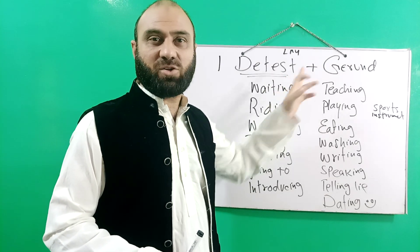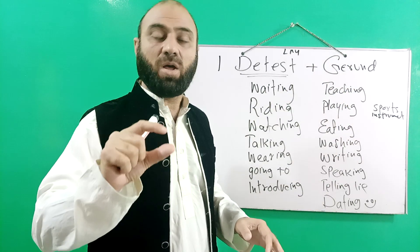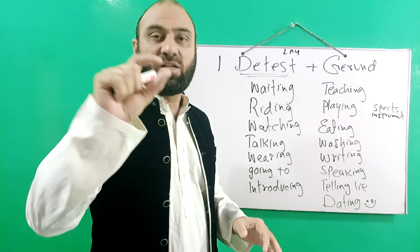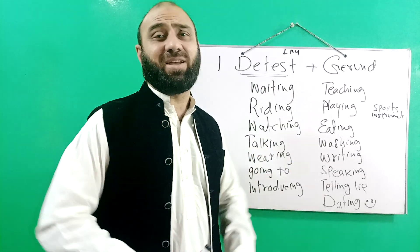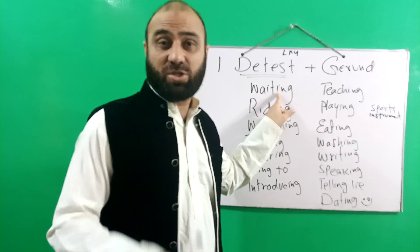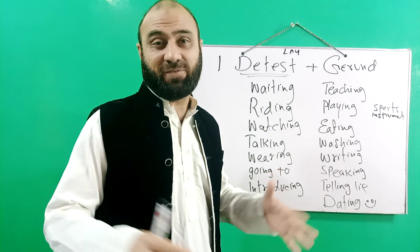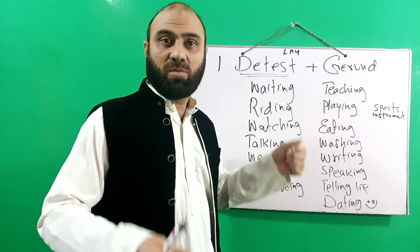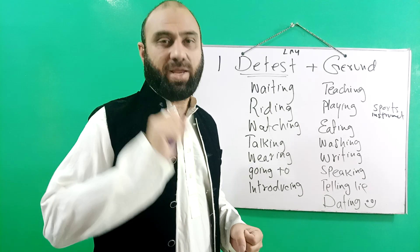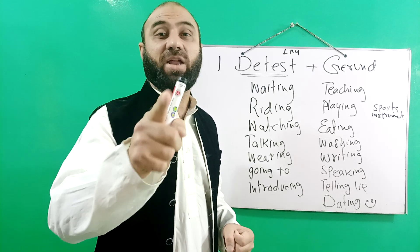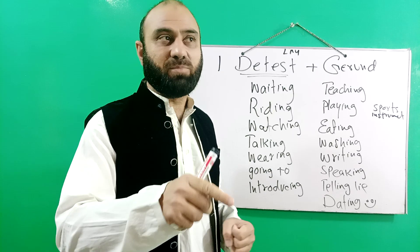I detest, followed by the gerund. The gerund is the verb's ing form — the first form is the verb's ing form. For example: I detest writing, using the verb's ing form.